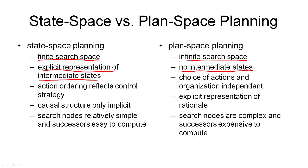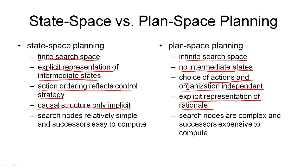In state space planning, the ordering of actions reflects the search control strategy being used, whereas in plan space planning the choice and organization in our plan is independent of our search strategy. In state space planning we consider one action after another and the ordering in which we consider them is also the ordering they end up in the plan, even if no ordering constraint is necessary. In plan space planning we are much more flexible — two actions don't necessarily need to be ordered with respect to each other and can be in parallel. Also, in plan space planning we have an explicit representation of the rationale for why actions are in the plan, given by the causal links. There is no such structure in state space planning, which is important for plan execution when things go wrong.